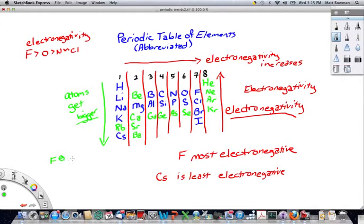F-minus is smaller than Cl-minus, Cl-minus is smaller than Br-minus, Br-minus is smaller than I-minus.